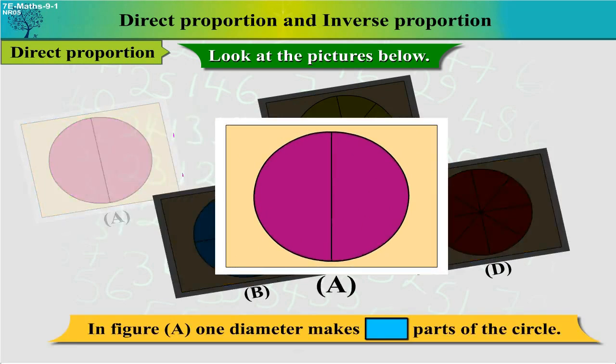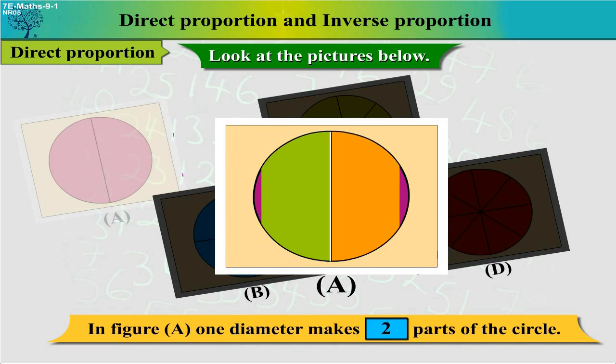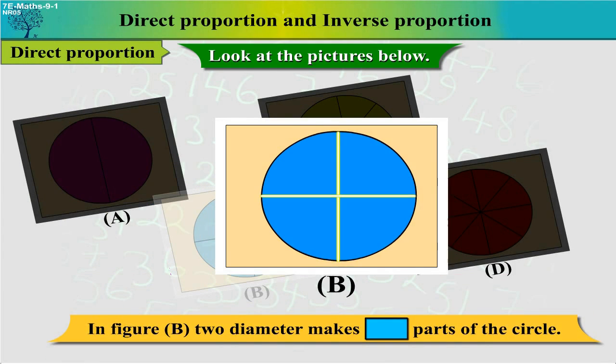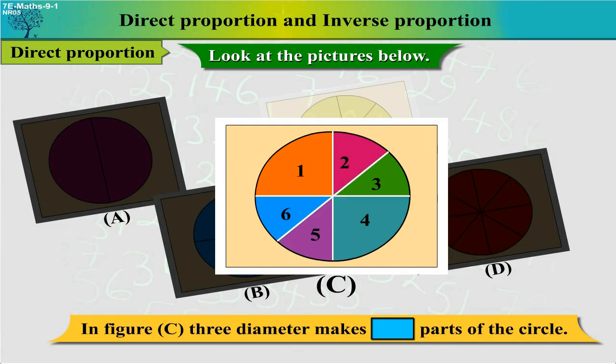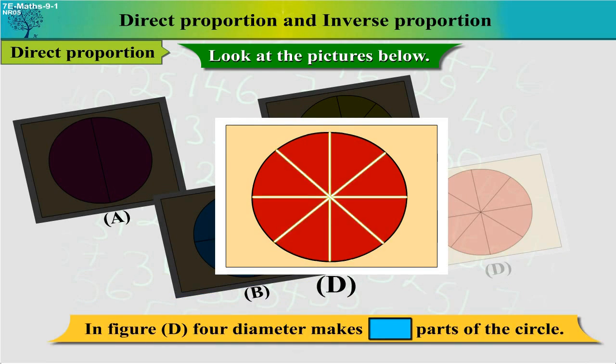In figure A, one diameter makes two parts of the circle. In figure B, two diameters make four parts of the circle. In figure C, three diameters make six parts of the circle. And in figure D, four diameters make eight parts of the circle.